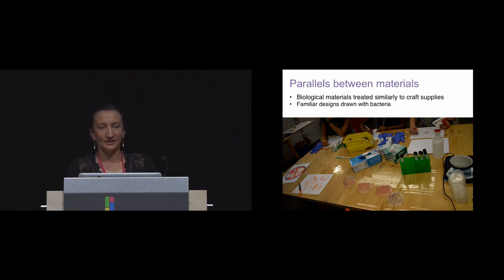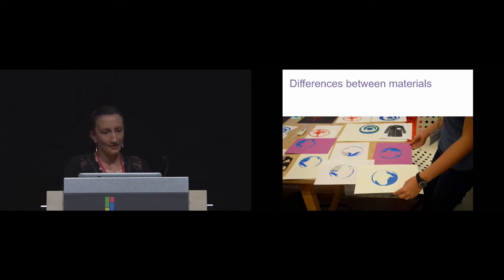The students also used the bacteria to paint and recreate the designs that they were most familiar with. Some of the microbial art included trees, stars, hearts. And somebody actually tried to paint a picture of Jason Bourne. So basically, we saw these kind of fluid transitions between analog and biological materials. And this was especially salient when students drew some of their designs on paper and then transferred them onto the Petri dish with bacteria.